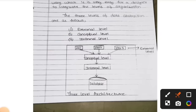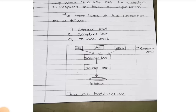Conceptual level is the next level above external level. For example, in your college database they have students' information, faculty information, fees, collector information, and salaries — everything is stored there. Will you be able to check your faculty's salary? No. We can only check our own information — about our fees, identity card, and our things only. That is the external level.